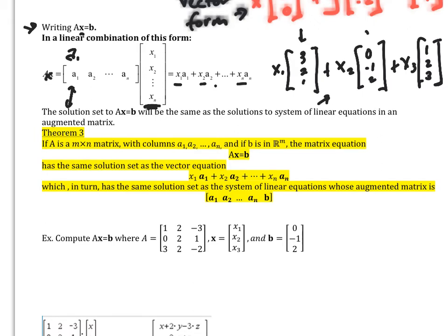Now the solution set to this will be the same thing as if you put it into an augmented matrix. So theorem three states that if A is an M by N matrix with columns A1, A2, up to A sub N, and if B is in R^M, the matrix equation A equals B has the same solution set as the vector equation that we have there, which in turn has the same solution set of the linear equations whose augmented matrix is this right here. So this is pretty powerful linking the vector form into our augmented matrix.